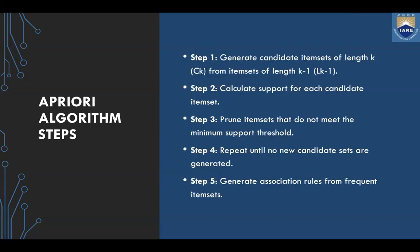There are certain steps involved in the Apriori algorithm. First, generate candidate item sets of length K from item sets of length K minus one. Next, calculate support for each candidate item set. Then prune item sets that do not meet the minimum support threshold — those item sets not meeting the criteria are removed. Repeat until no new candidate sets are generated, and finally generate association rules from the frequent item sets.